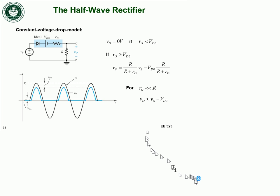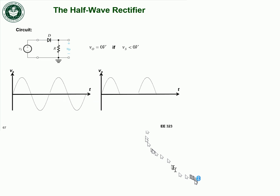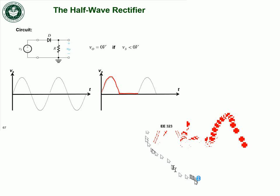I'm going to continue talking about rectifiers. We went over the half-wave rectifier in the last class — it just consists of a diode in series with the resistor, and you take the voltage across the resistor. We went over the ideal model. When the input is positive, the output mirrors the input. And when the input goes negative, you're reverse biasing the diode, so the output becomes zero. When the input becomes positive again, your output again mirrors your input voltage.